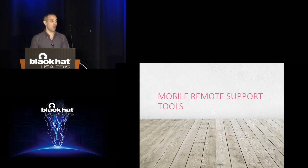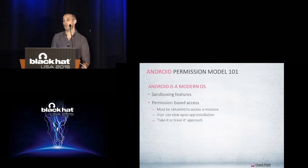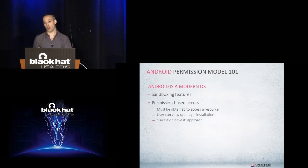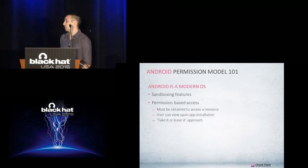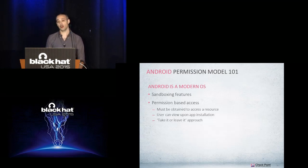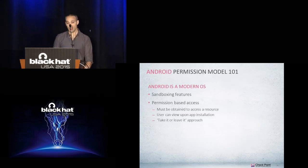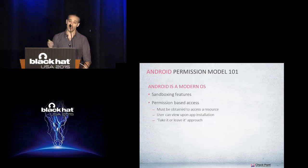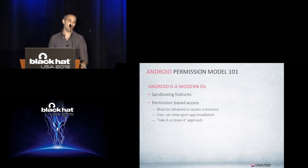Let's discuss a little about the mobile remote support tool and how it works. Android is a modern operating system, which means that every application runs inside a sandbox. In order to get access to other resources on the device or to other applications, it needs to obtain permission. A permission is something the application needs to declare in its manifest. When the user wants to install a new application, they get a list of all the permissions the application requires — and currently it is a take-it-or-leave-it approach. Google improved the mechanism in newer versions of Android, but the main principle remained the same.